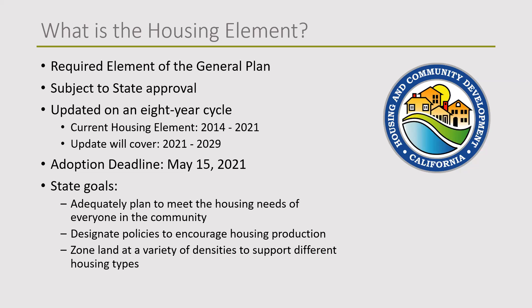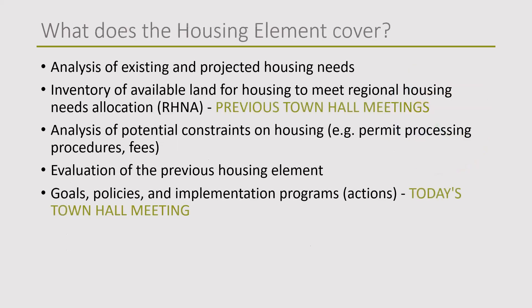There has been for a while a housing crisis in California, and the housing element is one mechanism by which the state tries to address that by making sure local agencies are planning for their community's housing needs. The housing element covers an analysis of existing and projected housing needs, an inventory of land available for housing to meet the regional housing needs allocation, analysis of potential constraints, evaluation of previous programs and policies, and the goals, policies, and implementation programs themselves.